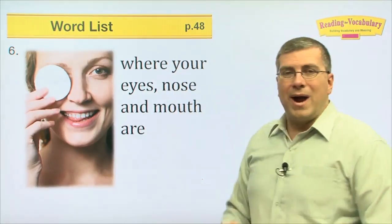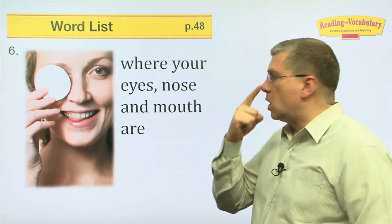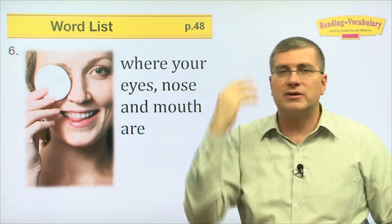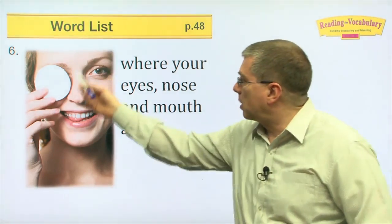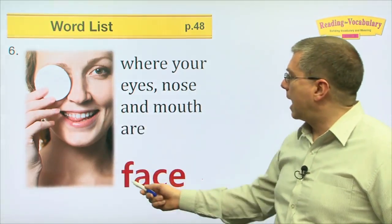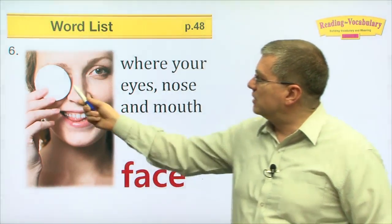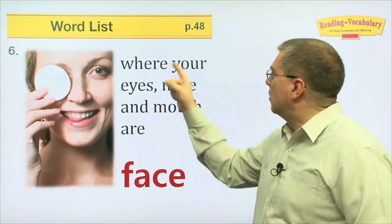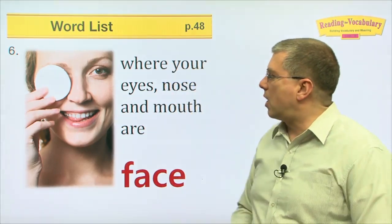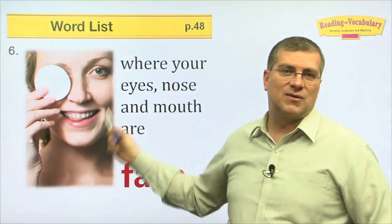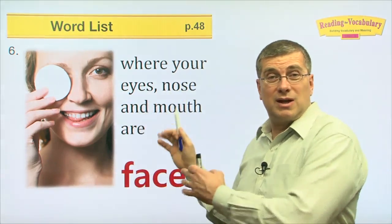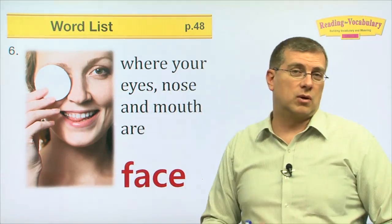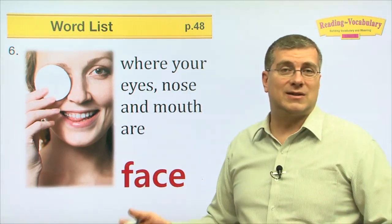Number six — where are your eyes, your nose, and your mouth? They're right here. What do we call this part of our body? We call it our face. Where your eyes, nose, and mouth are — that's a person's face. Remember, when we looked at Mount Rushmore, we saw four faces. So of course, we need to know what a face is.